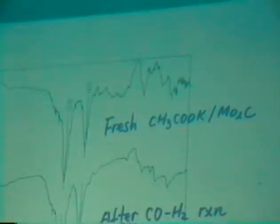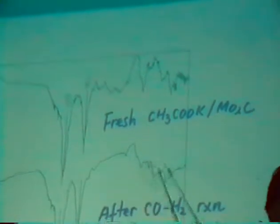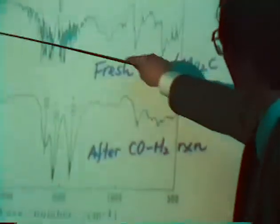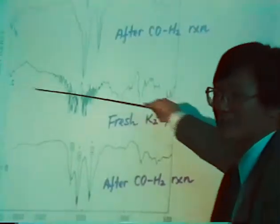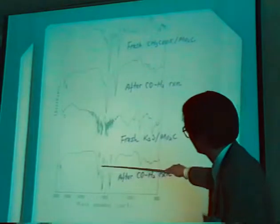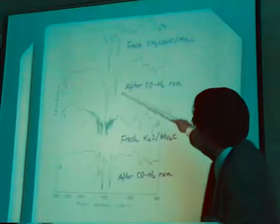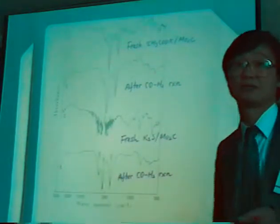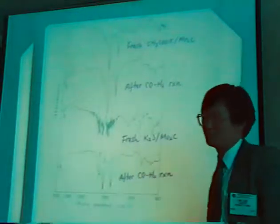This is the acetate. Before the reaction you see the acetate peak. After the reaction, this acetate peak remains almost unchanged. But for K2CO3, there's not much structure initially. This is just a blowup of the baseline. After the reaction you see new peaks formed. If you compare that, you can assign these two peaks to a kind of acetate. This is the hydroxyl bending structure.